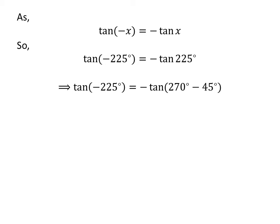As 225 degrees is equal to 270 degrees minus 45 degrees, tangent of minus 225 degrees is equal to minus tangent of 270 degrees minus 45 degrees.